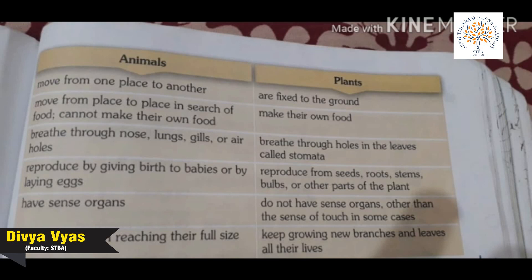Animals reproduce by giving birth to babies or by laying eggs, while plants reproduce from seeds, roots, stems, bulbs, or other parts of the plant. Animals have five sense organs — eyes, nose, ears, tongue, and skin — whereas plants do not have sense organs, other than the sense of touch in some cases. Finally, animals stop growing on reaching their full size, but plants keep growing new branches and leaves all their lives.